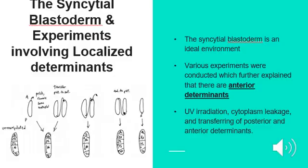Various experiments were conducted which further explained that there are determinants that specify either the anterior or posterior fates, while inhibiting the other. These experiments included manipulations involving UV irradiation, cytoplasmic leakage, and transferring of posterior and anterior determinants.